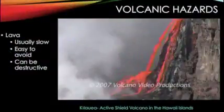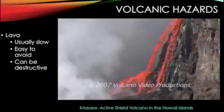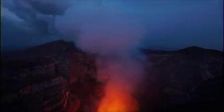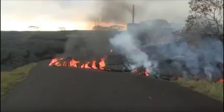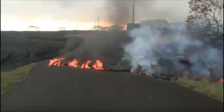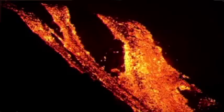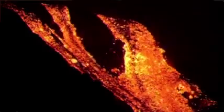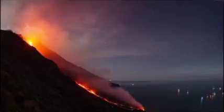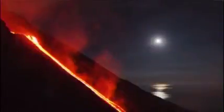Lava is molten rock expelled by volcanoes during eruptions. Lava has hot temperatures ranging from 1,292 to 2,192 degrees Fahrenheit. Lava flows are usually slow, giving people and animals enough time to escape. However, lava flows can speed up down steep slopes and cause destruction. For example, in Nyiragongo in the Democratic Republic of Congo, on the night of January 10, 1977, lava flows sped down a steep slope, overwhelming sleeping residents at night.